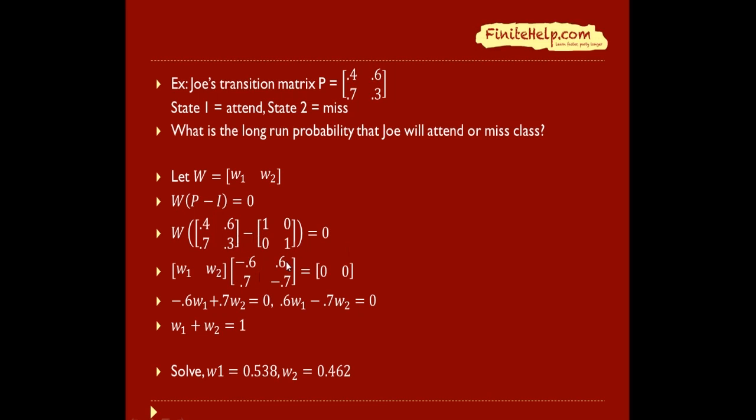From this, we can formulate two equations. We have w1 times negative 0.6 plus w2 times 0.7 equals zero. The other one is that w1 times 0.6 plus negative 0.7 times w2 equals zero. Finally, we have another formula that tells us w1 plus w2 equals 1, because W is a state vector, so the probabilities within the state vector have to sum up to 1.